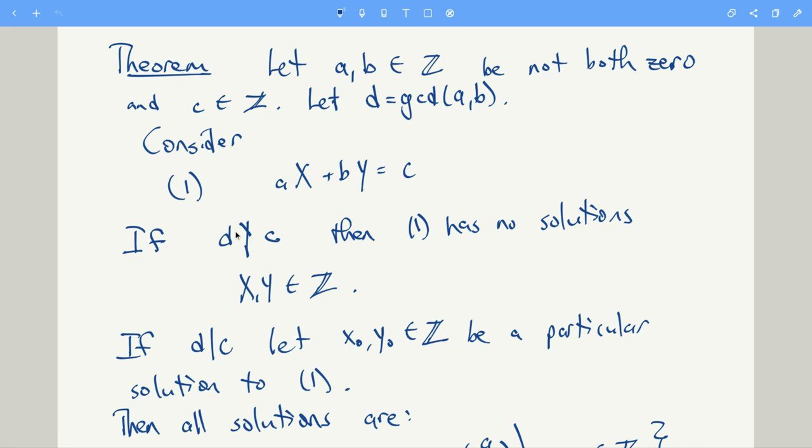first part of the theorem says that if d does not divide c, then this equation has no solutions. That's easy to see if we remember our previous propositions. Because if we have a solution ax plus by equals c, now the GCD of a and b divides a and divides b. So it divides anything of the form ax plus by. So if there is a solution, then d has to divide ax plus by. So therefore, d must divide c. So that tells you that if d does not divide c, then there's no solutions.